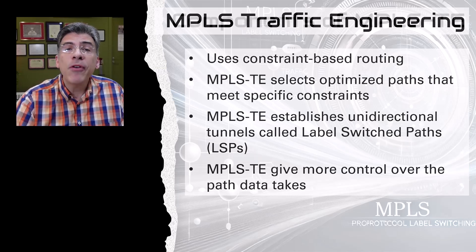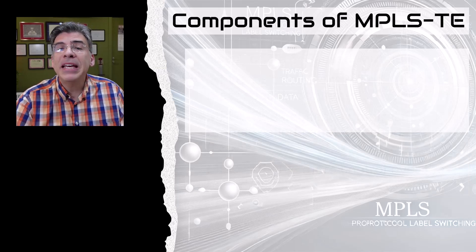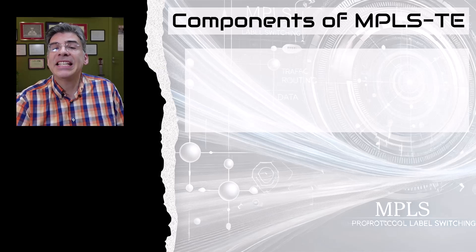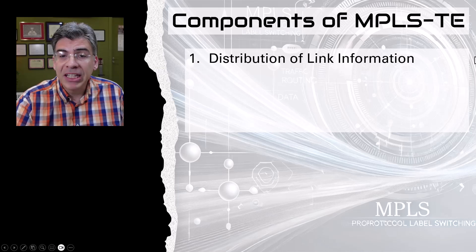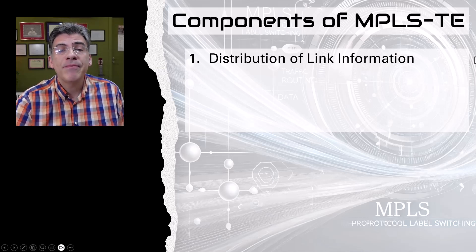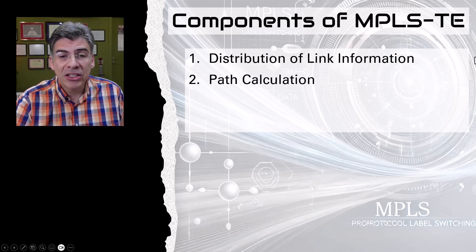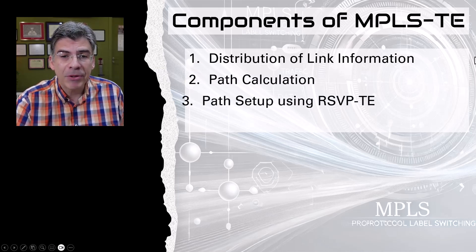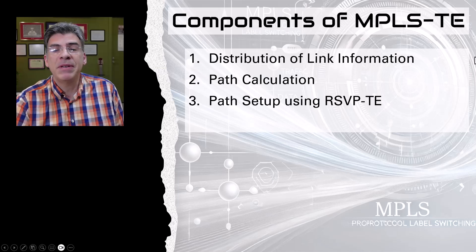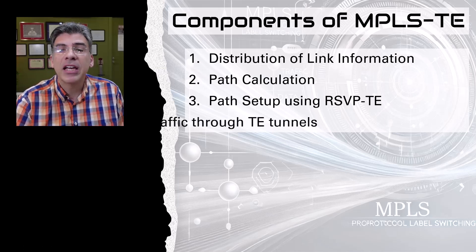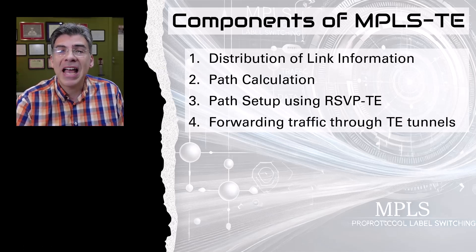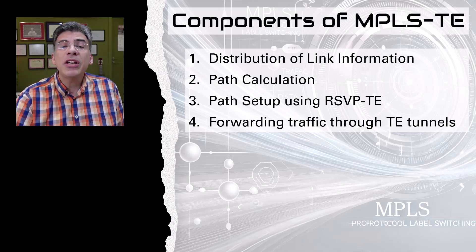To achieve all of this, MPLS TE is comprised of four specific components: the distribution of link information, path calculation, path setup using RSVP-TE, and finally forwarding traffic through the established TE tunnels. We'll discuss each of these components in further detail.